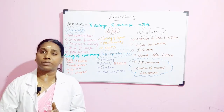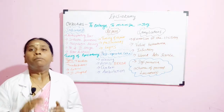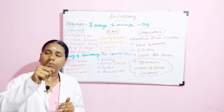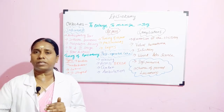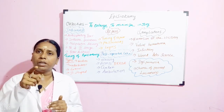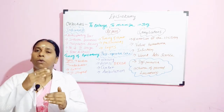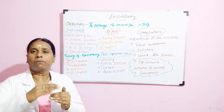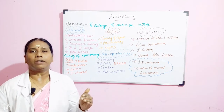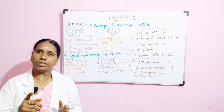The mediolateral episiotomy also starts from the center of the fourchette but goes laterally — around 2.5 centimeters — so you start from the center and end laterally. The lateral episiotomy begins one centimeter away from the center of the fourchette, where you give a right or left cut.